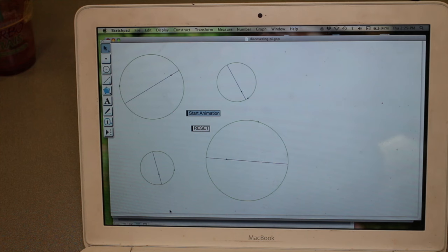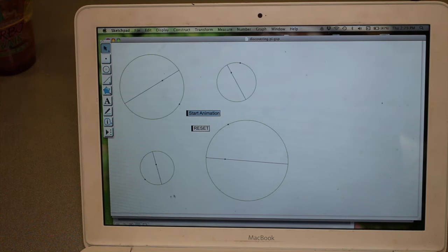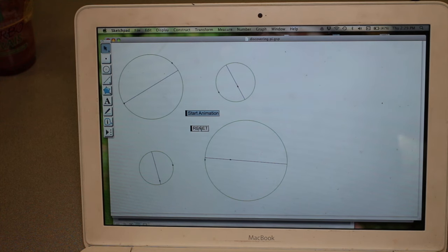In Grade 8, they were developing the formula for the circumference of a circle. We had an animation in Sketchpad where they could see a dot going around the outside of the circle and then the dot going across the diameter. We did an activity where they could see the relationship between how many times it went around the circumference and how many times it crossed the diameter.